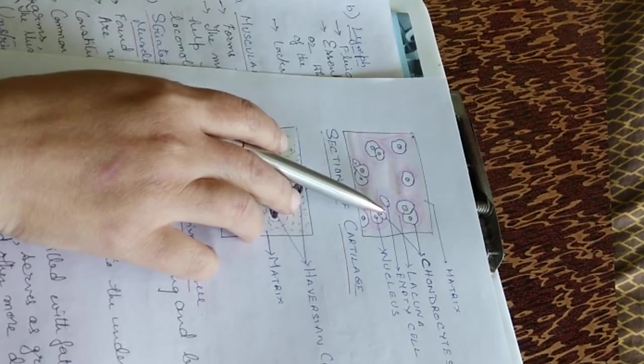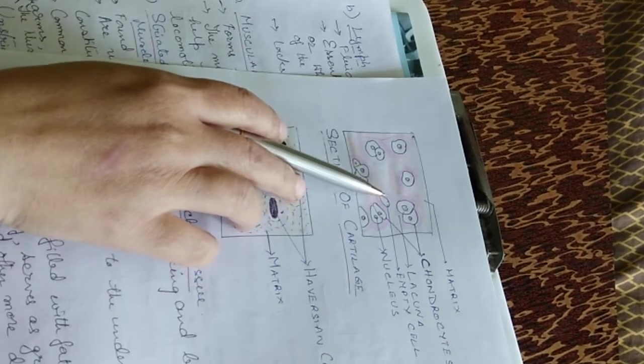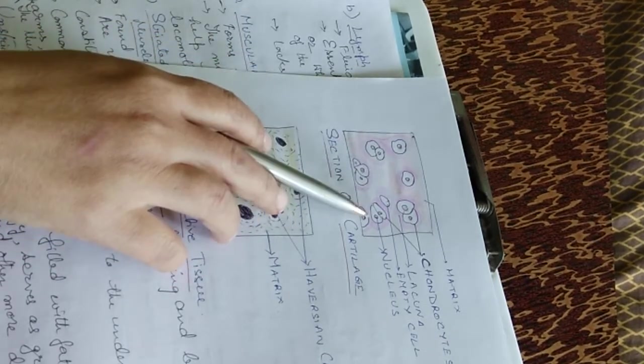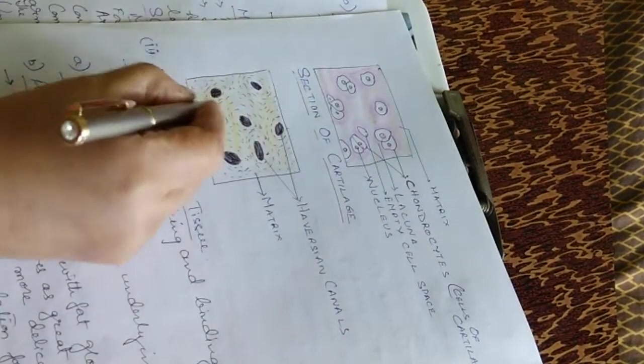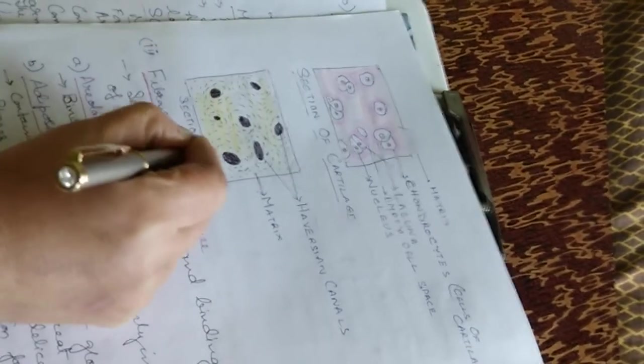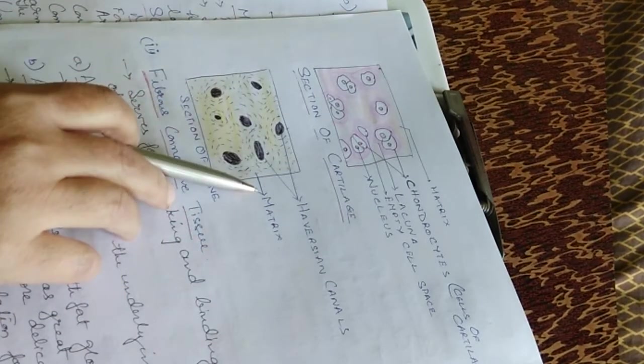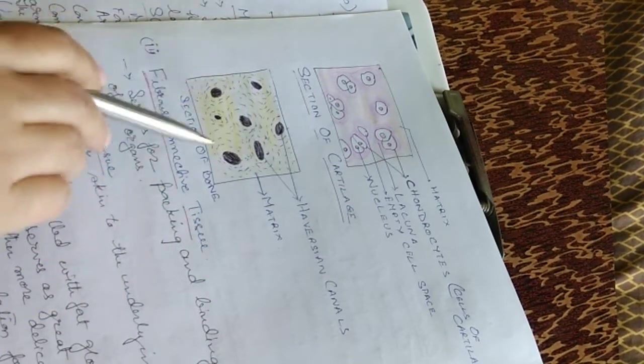These are the lacuna. And these are the empty cells which do not contain the nucleus. These are the nucleus which are present in the chondrocytes. This is the cross-section of the bone cell. These have Haversian canals. This is the matrix, the hard matrix. You can see.